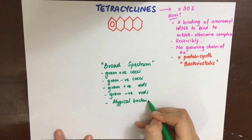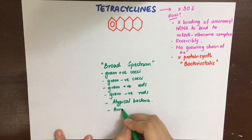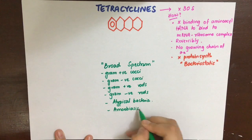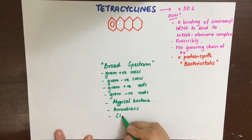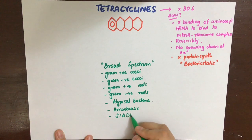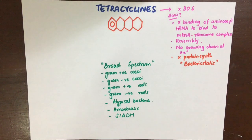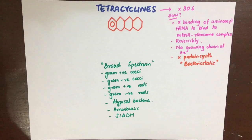Tetracyclines can also be used in amoebiasis and leprosy. One non-antimicrobial use is in syndrome of inappropriate ADH secretion (SIADH). Demeclocycline is not used as an antibiotic because it has nephrotoxicity and blocks ADH receptors, so it can be used in SIADH to oppose ADH activity.